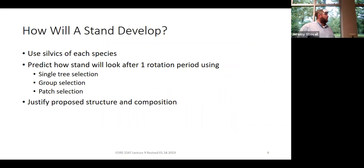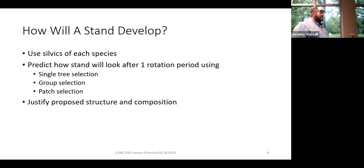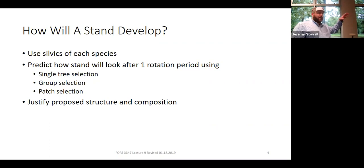Let's start with an exercise. I'm going to give you an SAF forest cover type, and I want you to imagine your cover type has been managed by someone using each of the three selection systems — split into thirds, one third single tree selection, one third group selection, one third patch selection. Imagine you've come in after a whole rotation. What is the structure and composition of each of those areas going to look like depending on how they managed it?